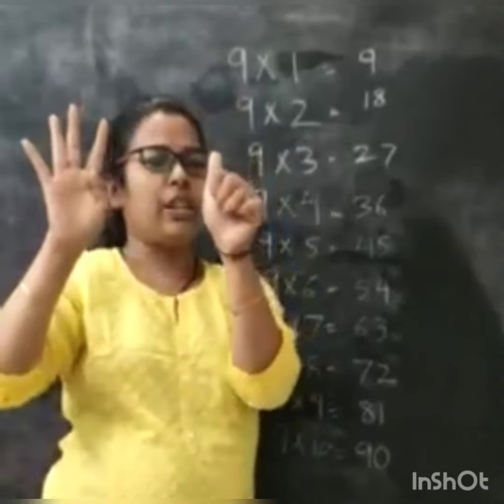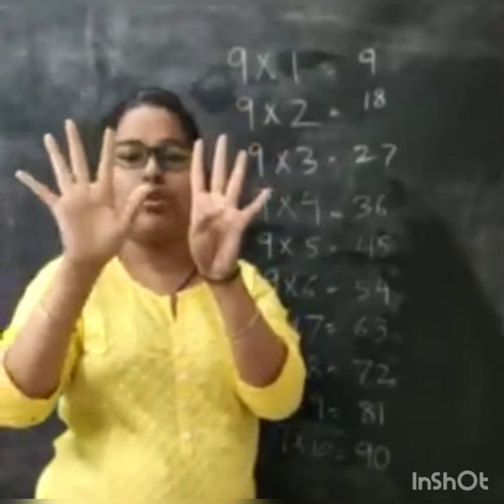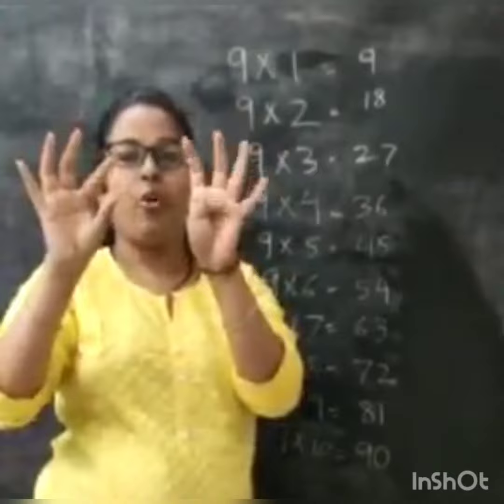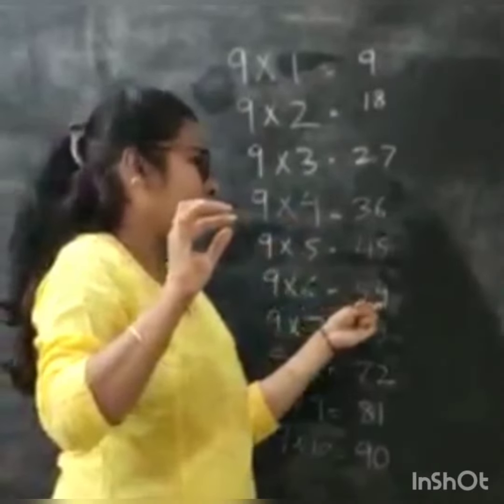Now I will close my sixth finger. So 5 over here, 4 over here. So 9 times 6 is 54.